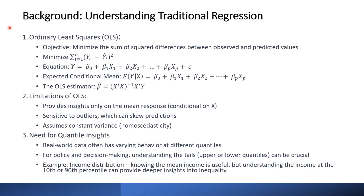A bit of background on traditional regression: in ordinary least squares our objective is to minimize the sum of squared differences between observed and predicted values. So we're minimizing the difference — actual y minus predicted y — squared, and we take a sum of that.